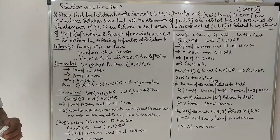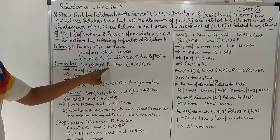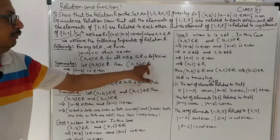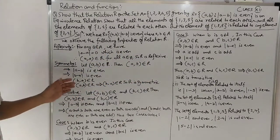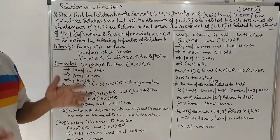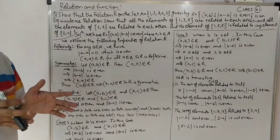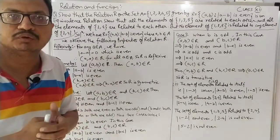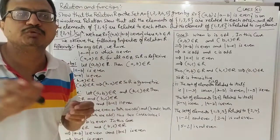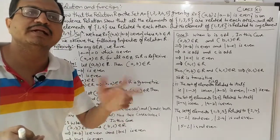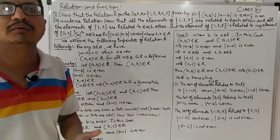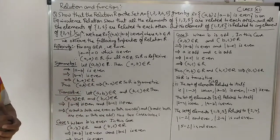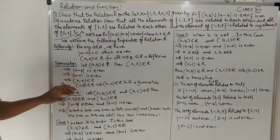Symmetric: Let (a, b) belong to R. आपको पता है कि if |a - b| is even - for example, 5 - 3 = 2 (even). Similarly, 3 - 5 = -2, and |-2| = 2 which is also even. So if |a - b| is even, then |b - a| is also even. Therefore (b, a) belongs to R.